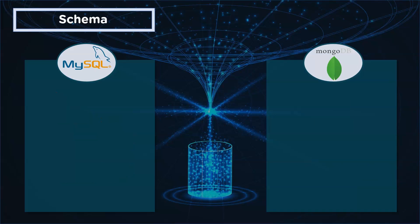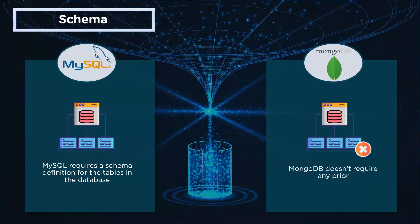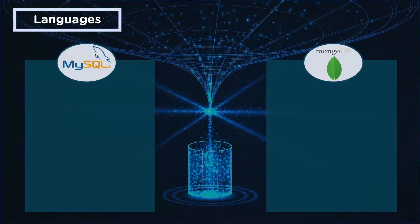Next up is schema. MySQL requires a set schema to define the tables in the database. The database administrator is required to define a schema which specifies how the different tables are stored. This schema is crucial in the case of MySQL. On the other hand, MongoDB doesn't require a prior definition of a schema.